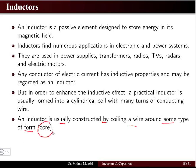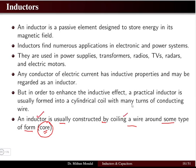Generally, an inductor is constructed by coiling a wire around some type of form known as the core. The core is made up of magnetic material having high permeability. The core is laminated so that the losses are reduced.